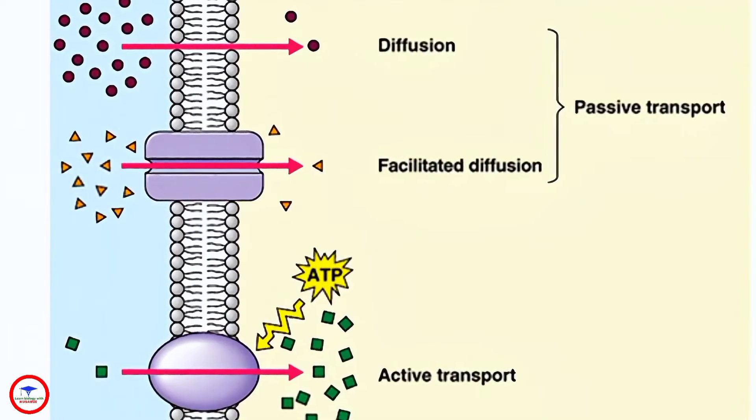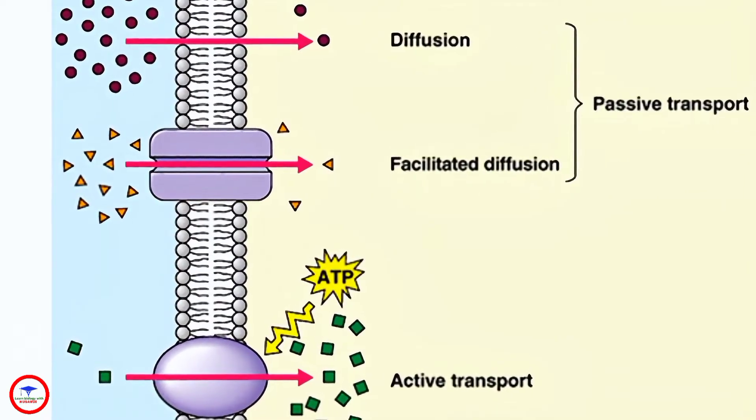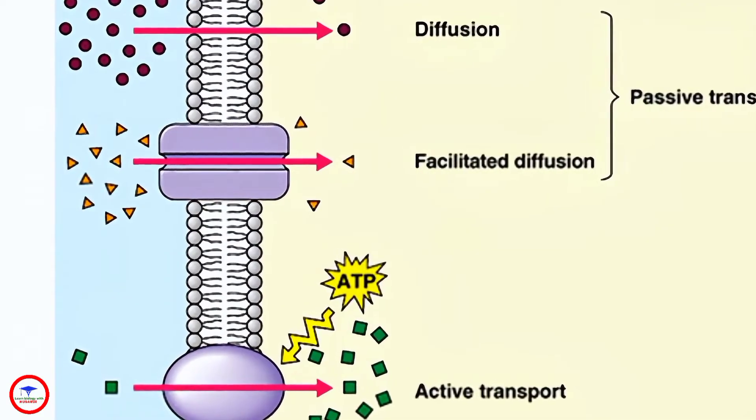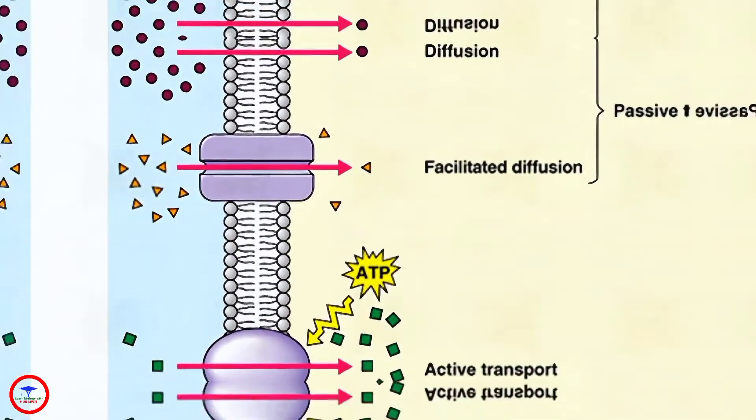Active transport, on the other hand, is the process where plants use energy to move substances against a concentration gradient, kind of like swimming upstream.